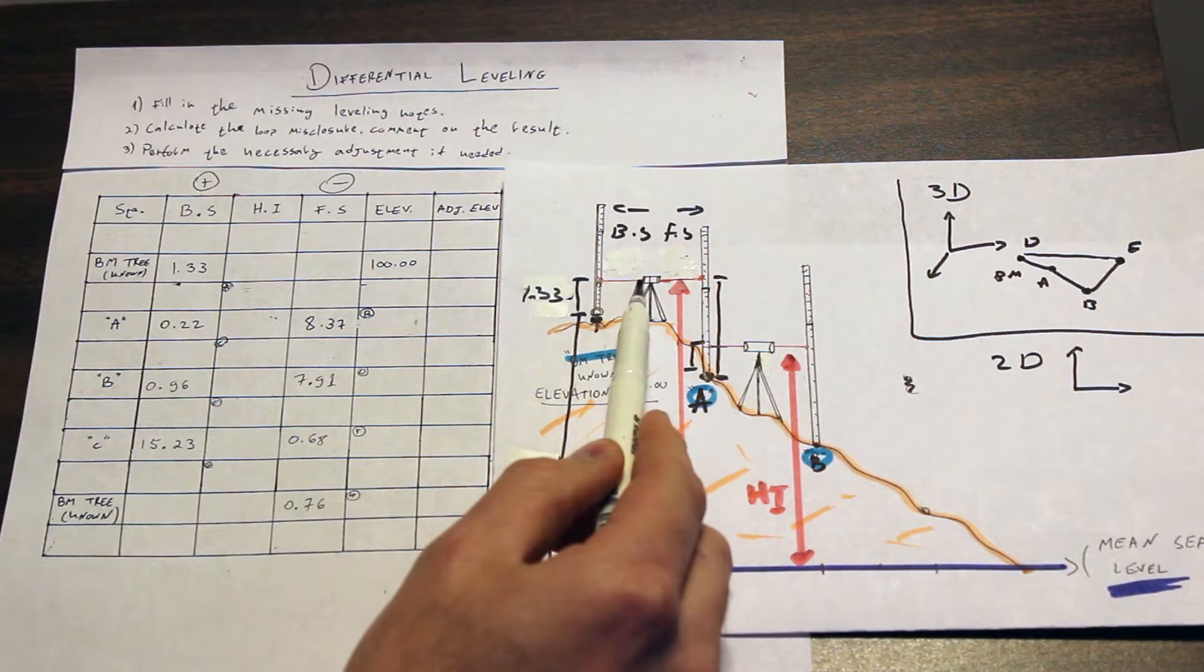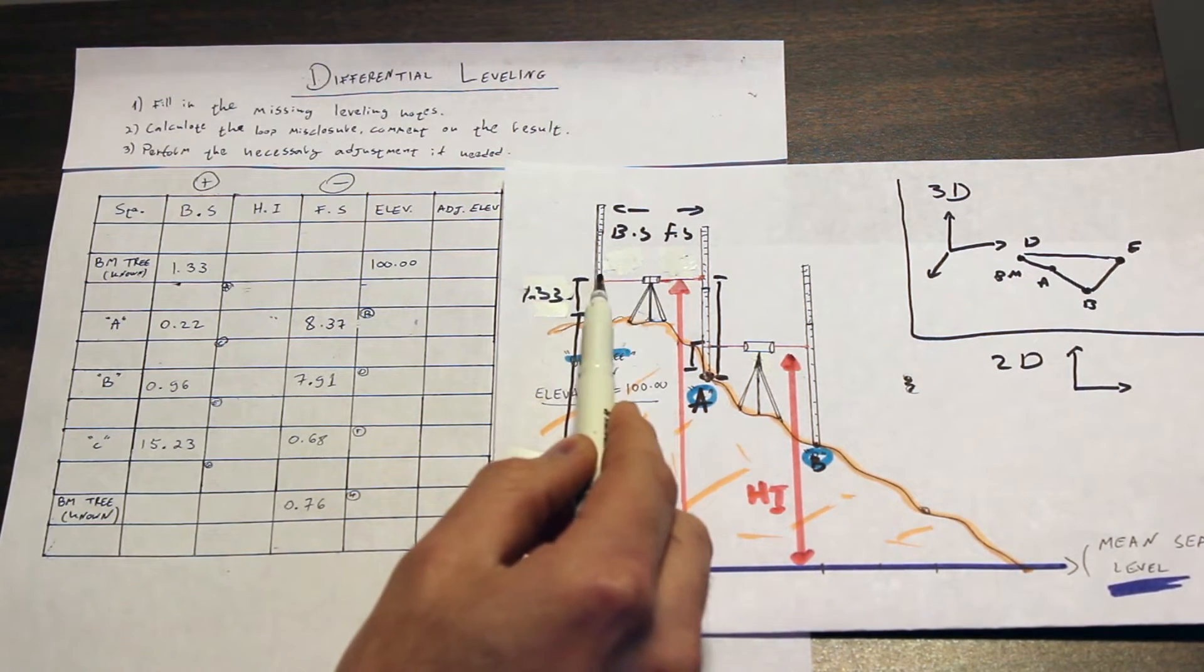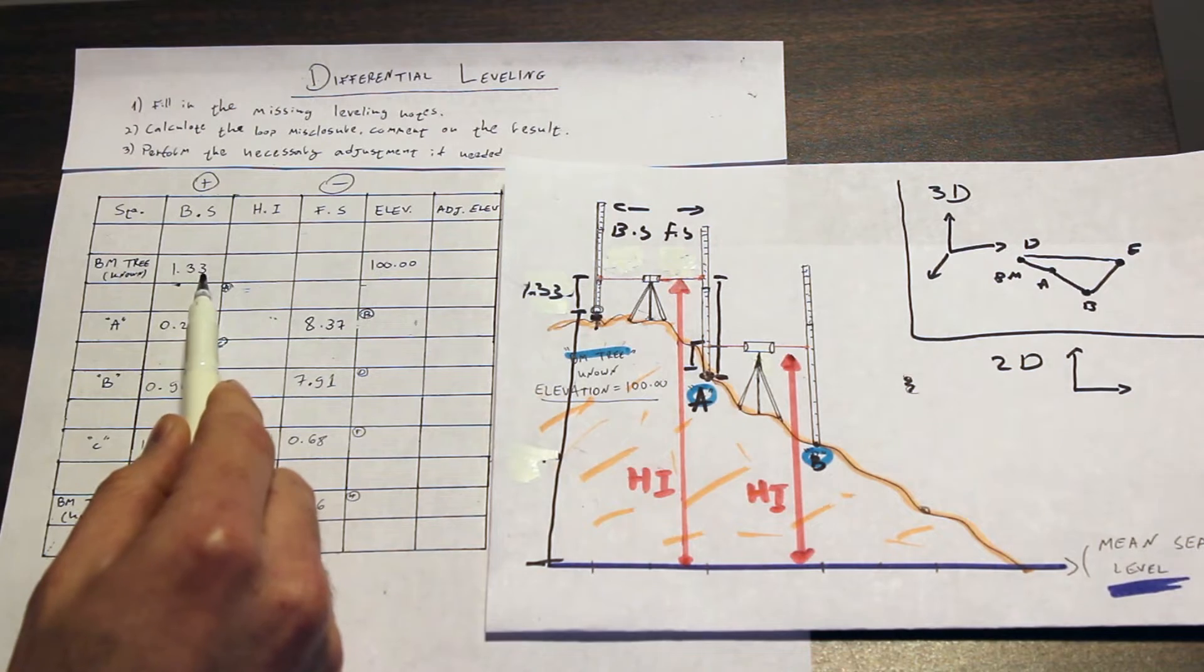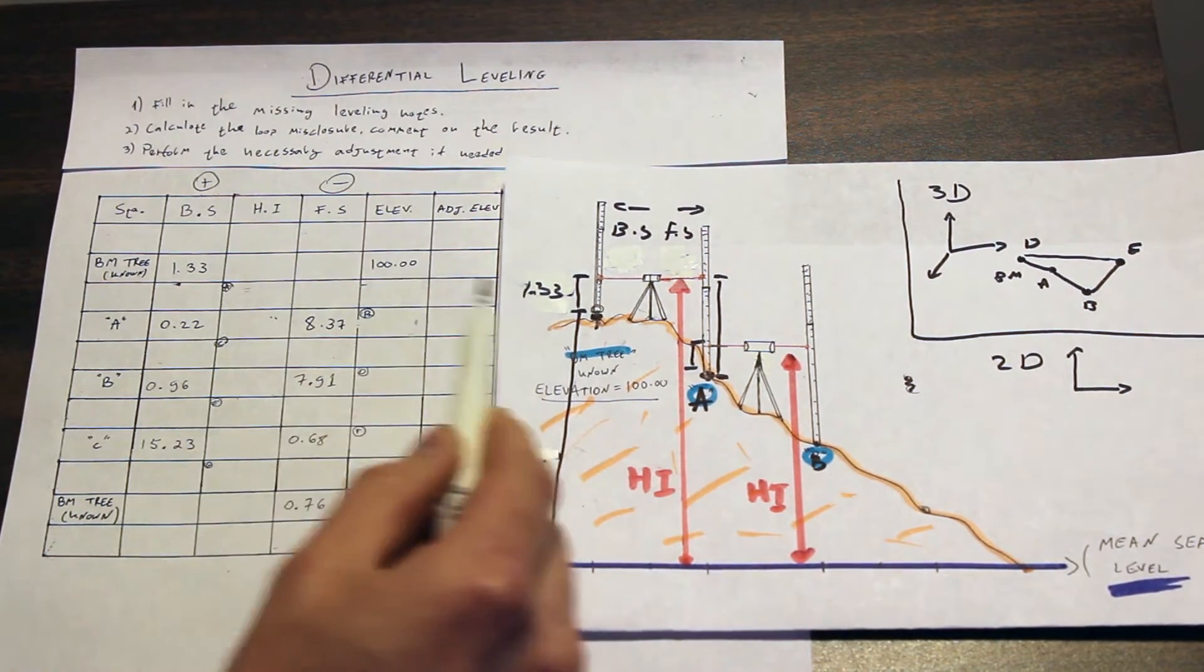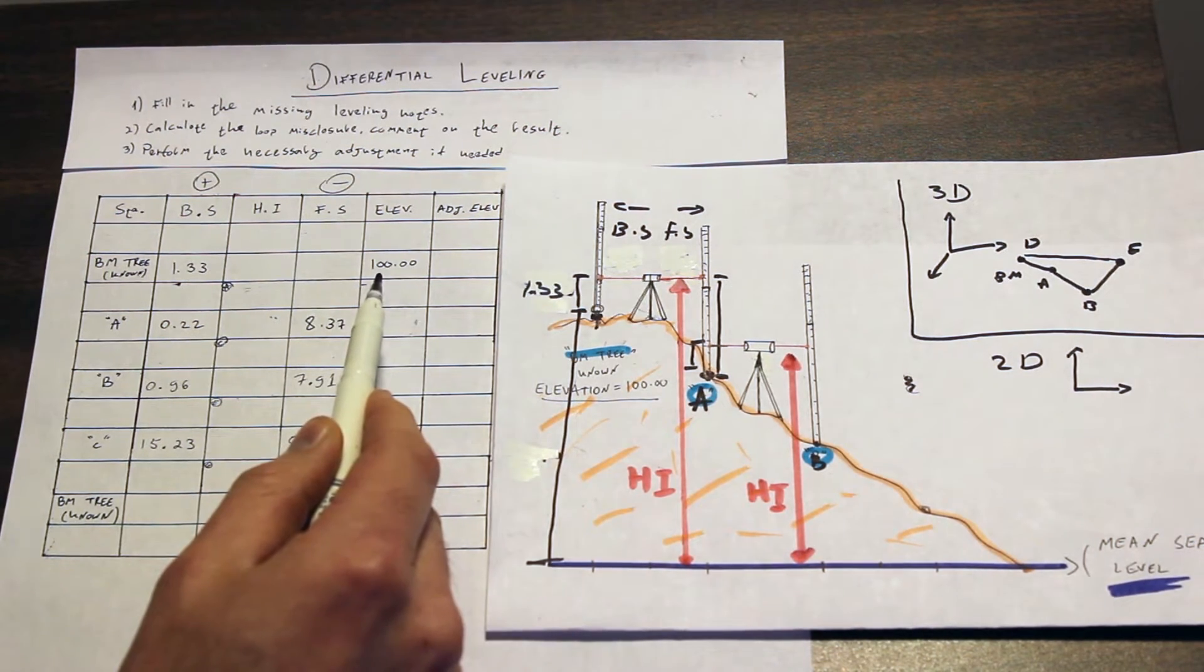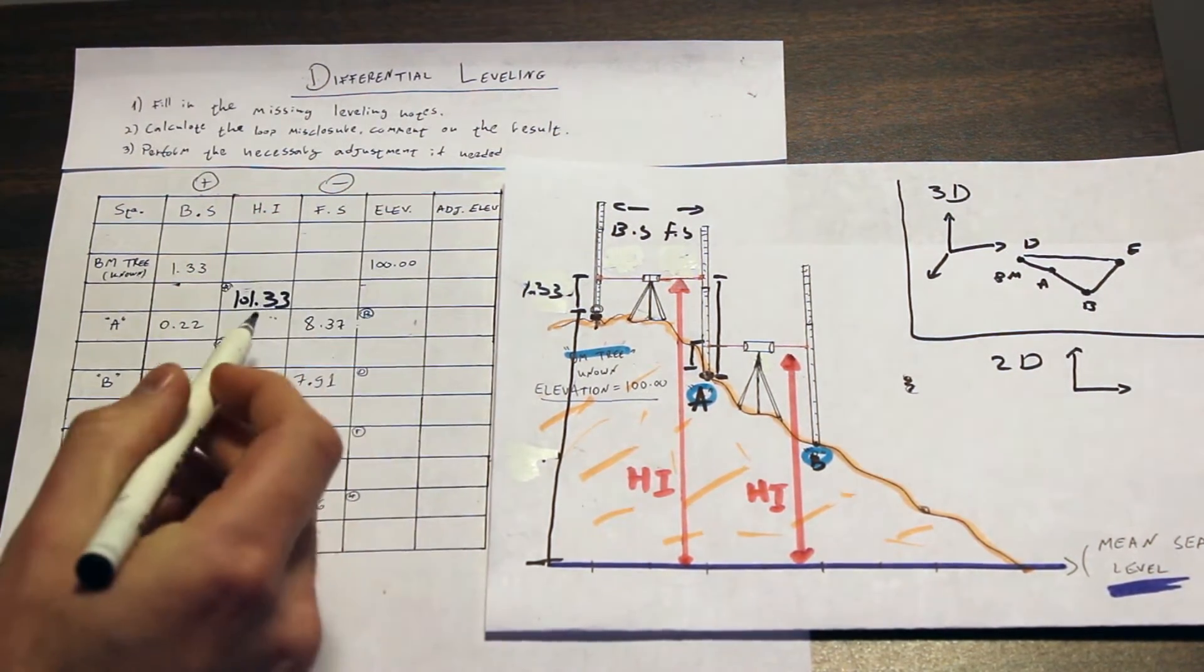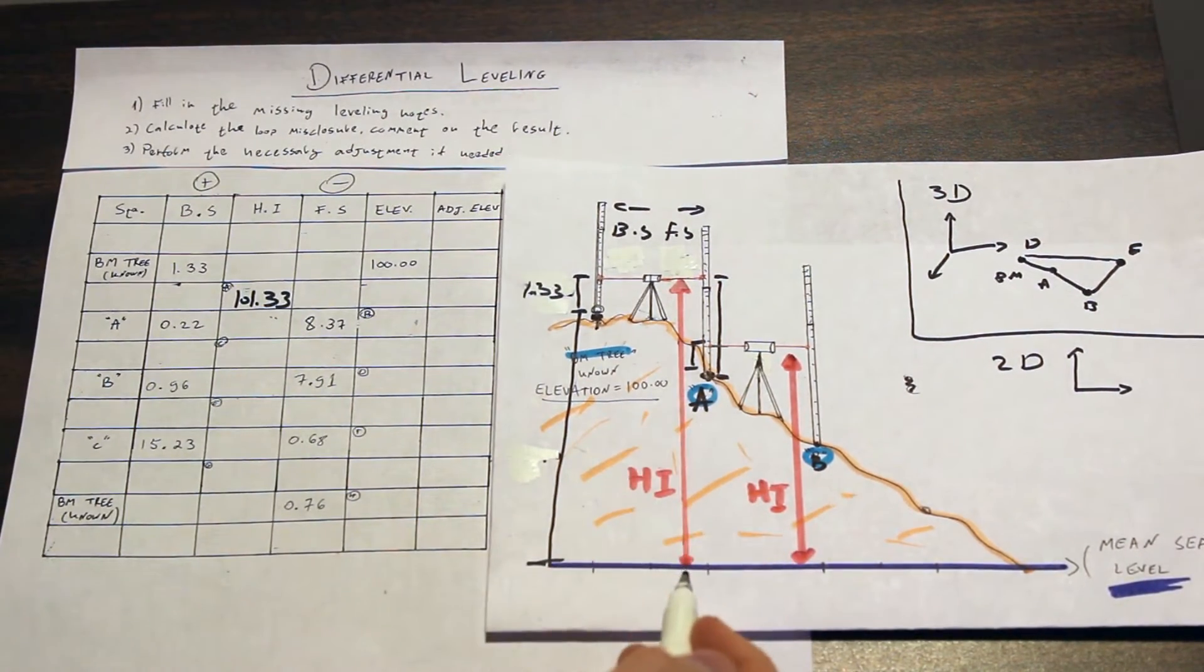We took the shot, and the first shot that we are taking from the device to the rod is called the backside. The device gave us a number of 1 meter and 33 centimeters. Now what does this number mean? That number, if we add it to our elevation, to our known elevation in the benchmark, will give us the height of the instrument, which is 101.33 meters. And this is basically this pink nice arrow.